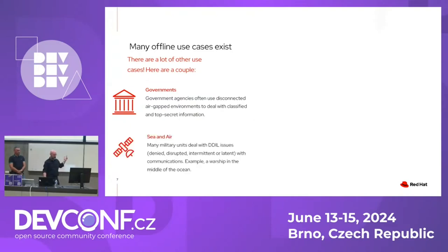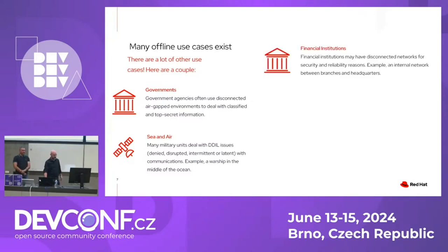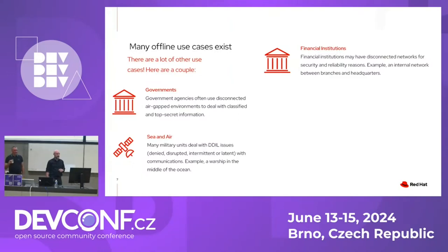Sea and air are also use cases — if you're on a ship at sea, like the Navy. And that was one of the main ways they did it before, for a long time: printing off PDFs, like big stacks of PDFs. Again, not very efficient.